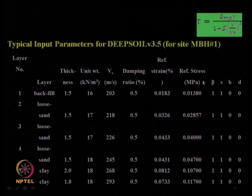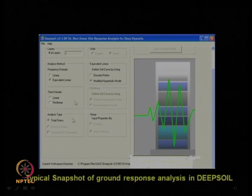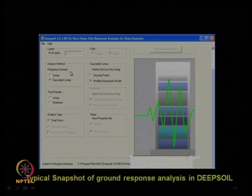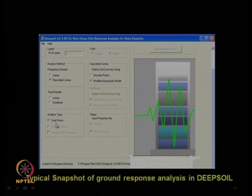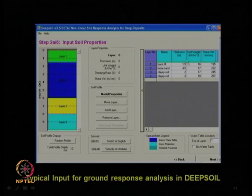Deep Soil software version 3.5 was used with input values including shear wave velocity, unit weight layer-wise, damping ratio, and reference strain — which we discussed earlier in the equivalent ground response analysis module. This is a snapshot of how the ground response analysis is done in Deep Soil. One can choose linear, equivalent linear, or non-linear analysis, as well as total stress or effective stress type. Input soil parameters are provided layer-wise from borehole data.